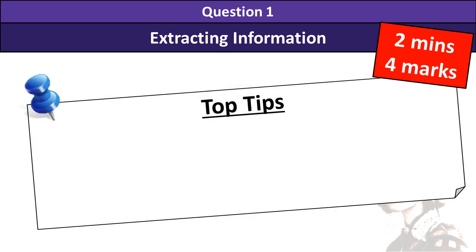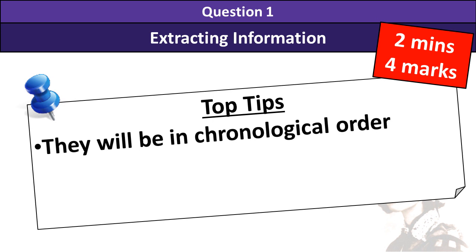Now there's a few things you need to remember when you're tackling this question. Number 1, those options are always going to be in chronological order. So that means if you've read a little halfway down the text and you haven't seen anything that relates to the first couple of points, then they must be wrong — they can't be there. So you want to read the text in order, the same order you go down the 8 options that it gives you.